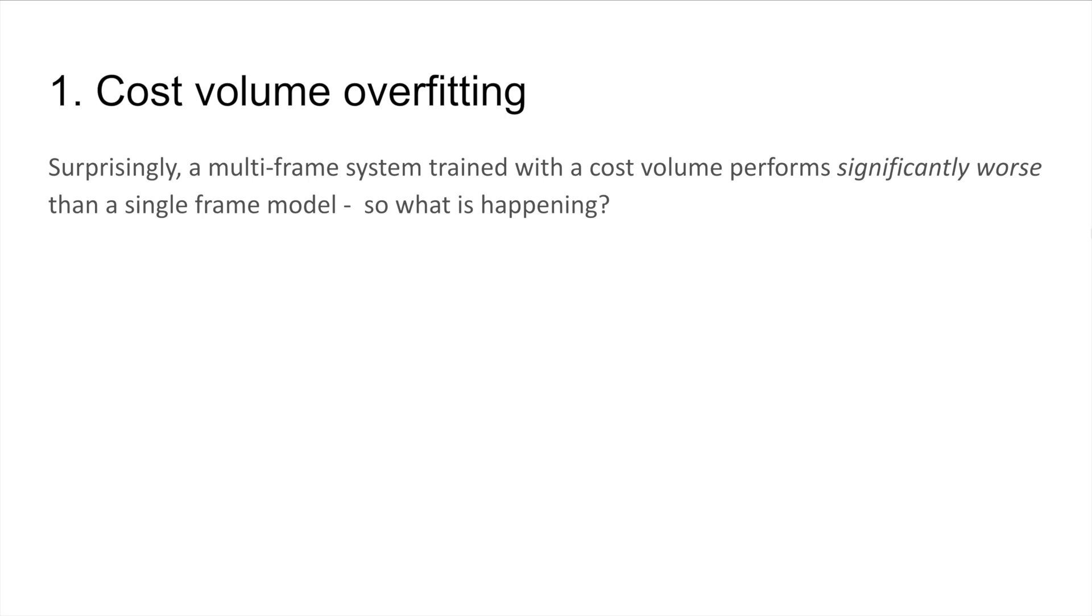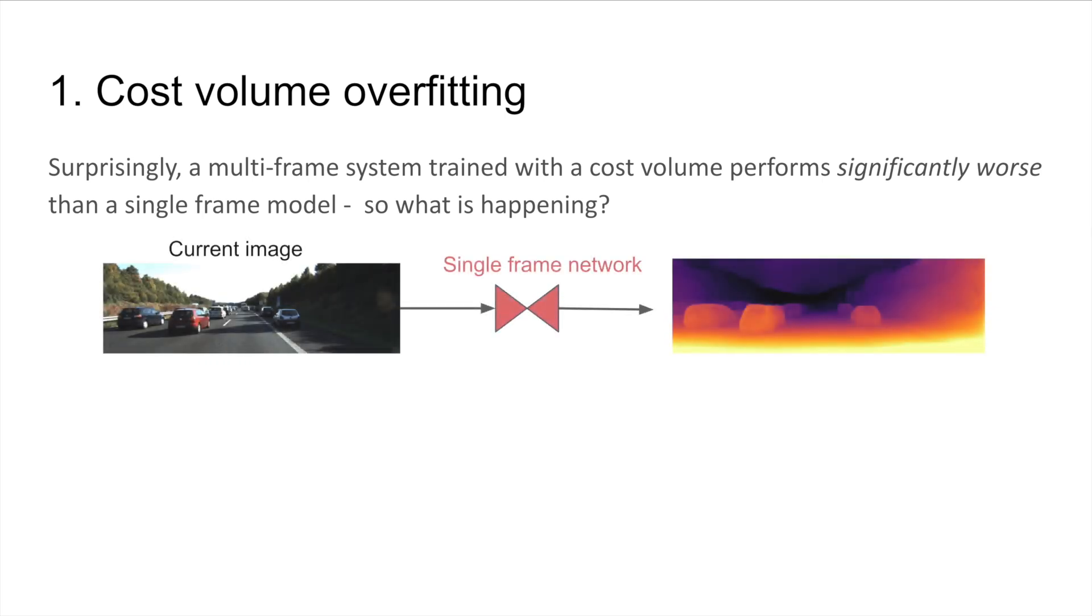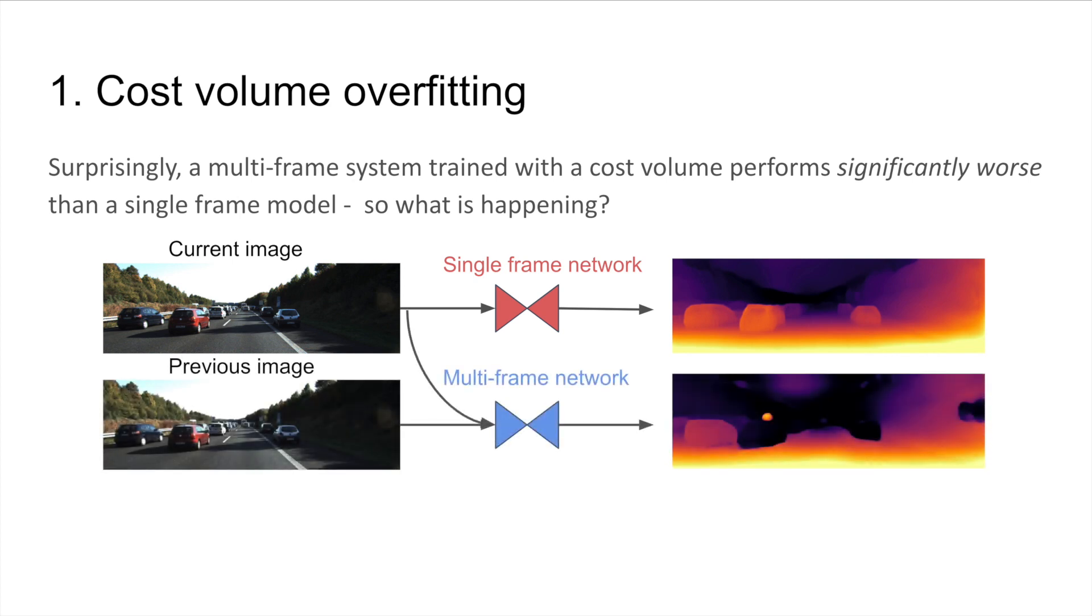We will now address each of these in turn, starting with cost volume overfitting. Surprisingly, a multi-frame system trained with a cost volume performs significantly worse than our single-frame model when trained from monocular video. So what is happening? To help us understand, let us look at this example. Notice the artifacts especially around moving objects for the multi-frame prediction.